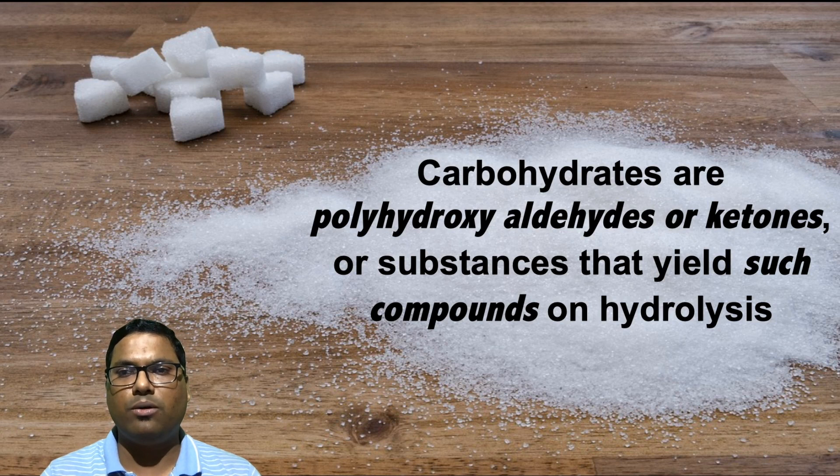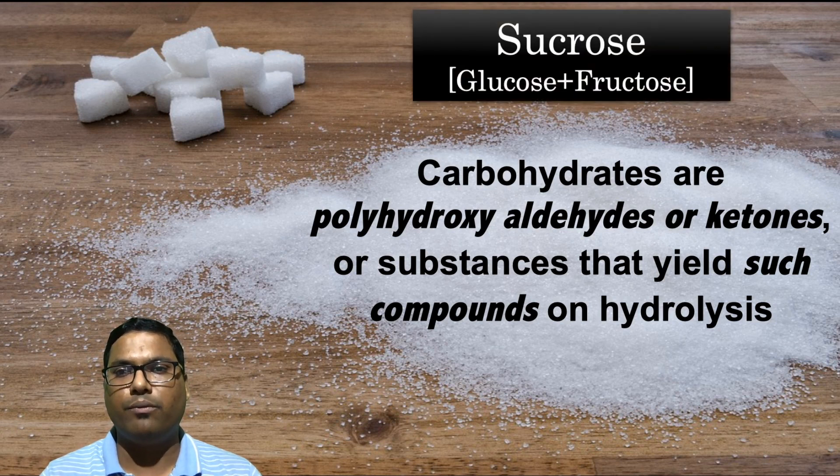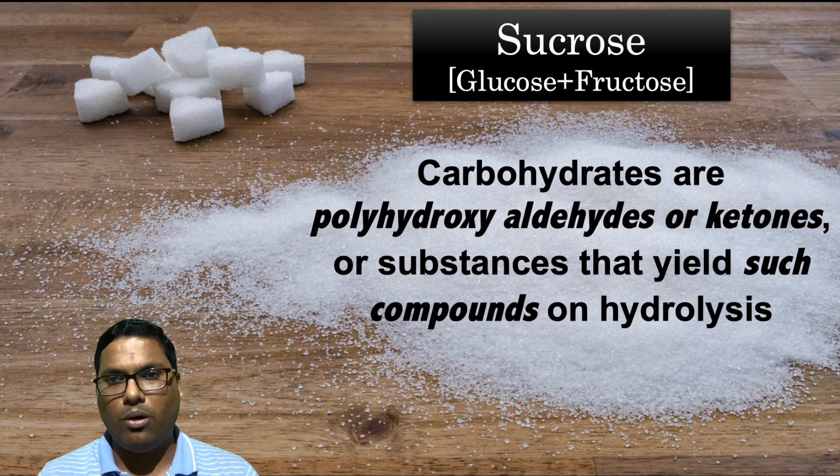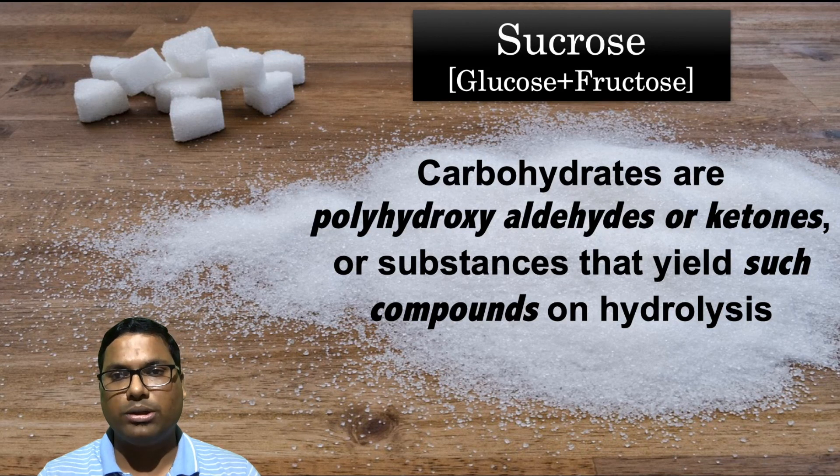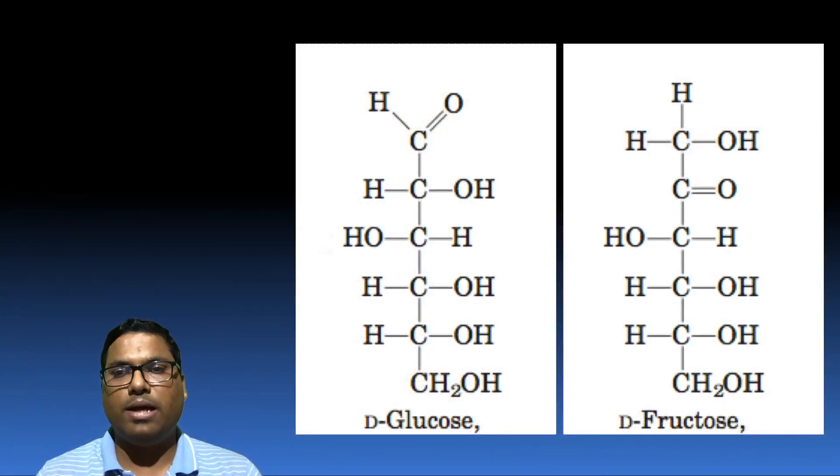So over here we are looking at the example of one of the very important sugars belonging to carbohydrate called sucrose, which is made up of two important sugars called glucose and fructose. You can see glucose and fructose over here in their actual molecular form. Both of them are having six carbons in them.